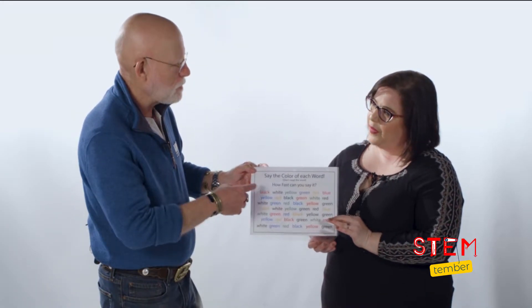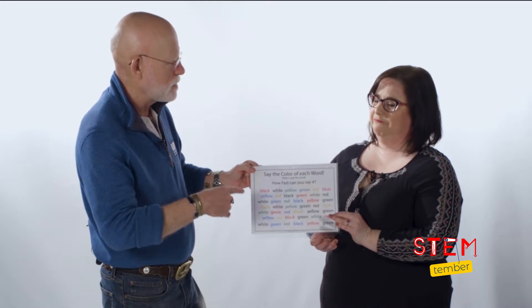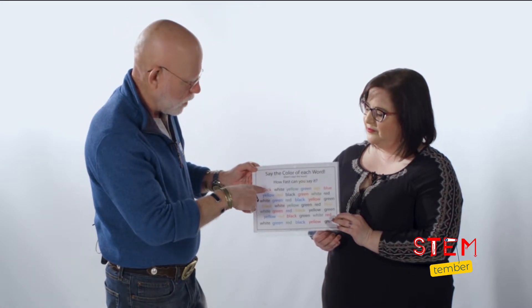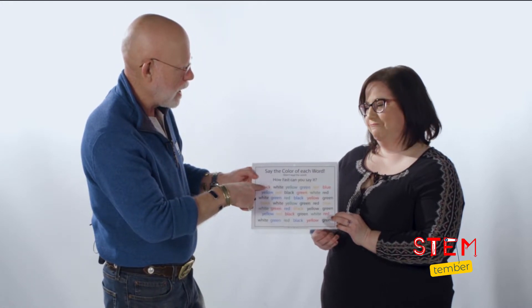So it's conceptual as opposed to visual. In other words, the concept of red is something that my brain knows. Yes. But the word is not red. The word is black. Exactly. Exactly. No wonder my poor brain is confused.